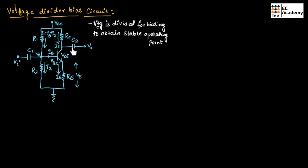Capacitors C1 and C2 are connected across the input as well as the output. These capacitors are known as coupling capacitors, which allow only AC signals to pass through the device — they block DC signals and pass only AC signals.